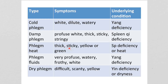Phlegm heat tends to be thick, sticky, yellow, or green, and there can be either spleen deficiency or heat underlying it. Phlegm fluids tend to be very profuse, watery, frothy, and white, with yang deficiency underlying. Dry phlegm gives you difficult and scanty yellow phlegm, with yin deficiency or dryness underlying.